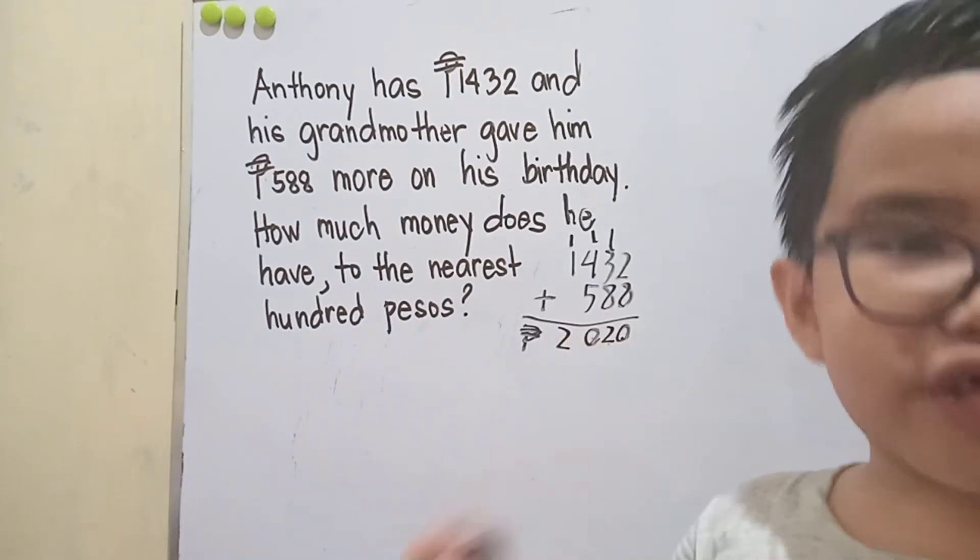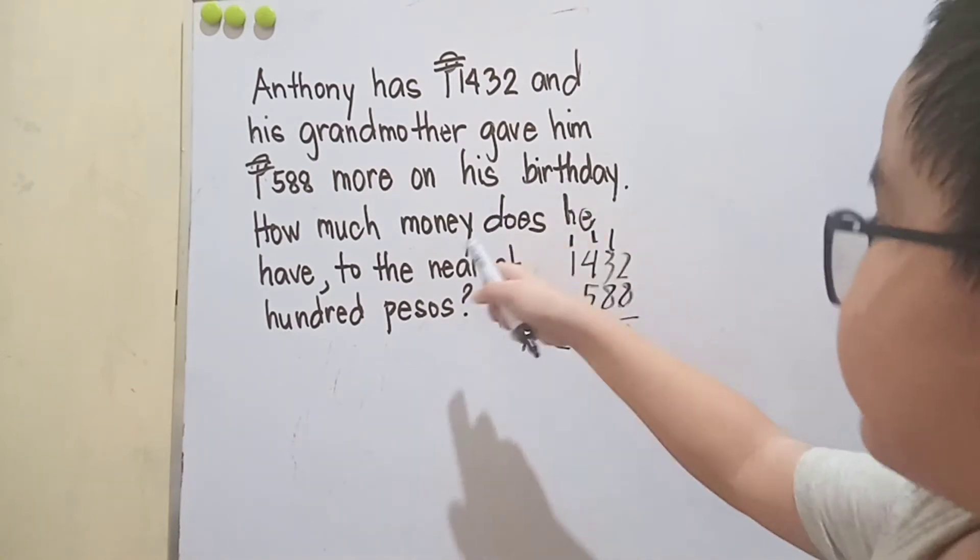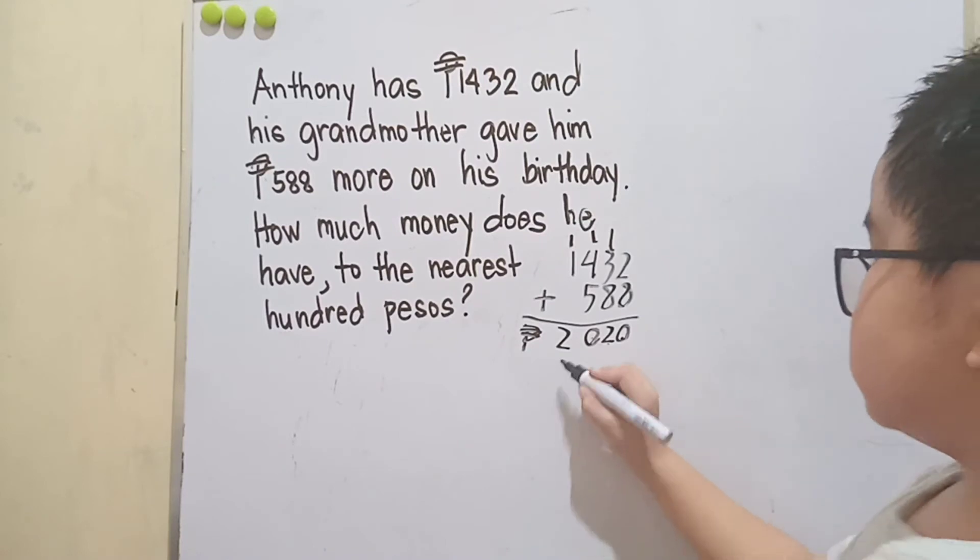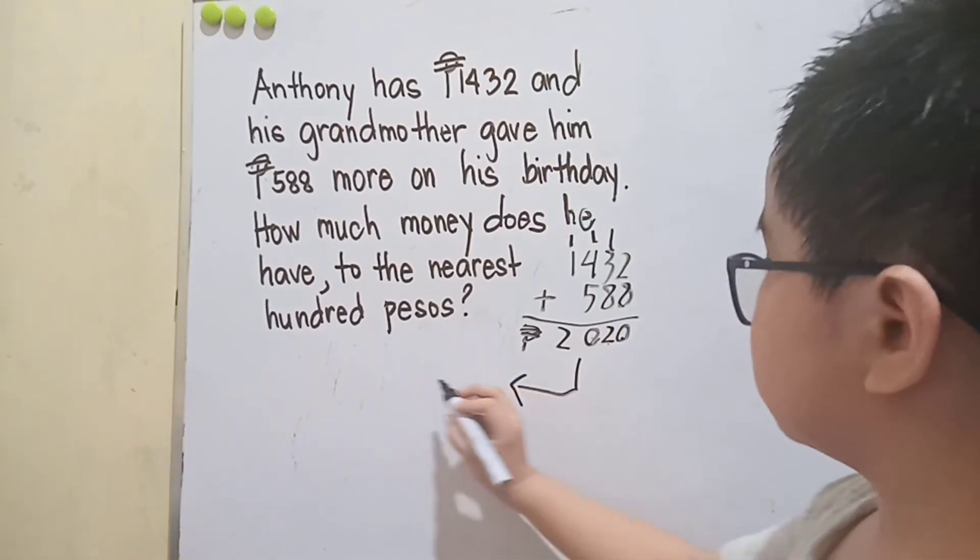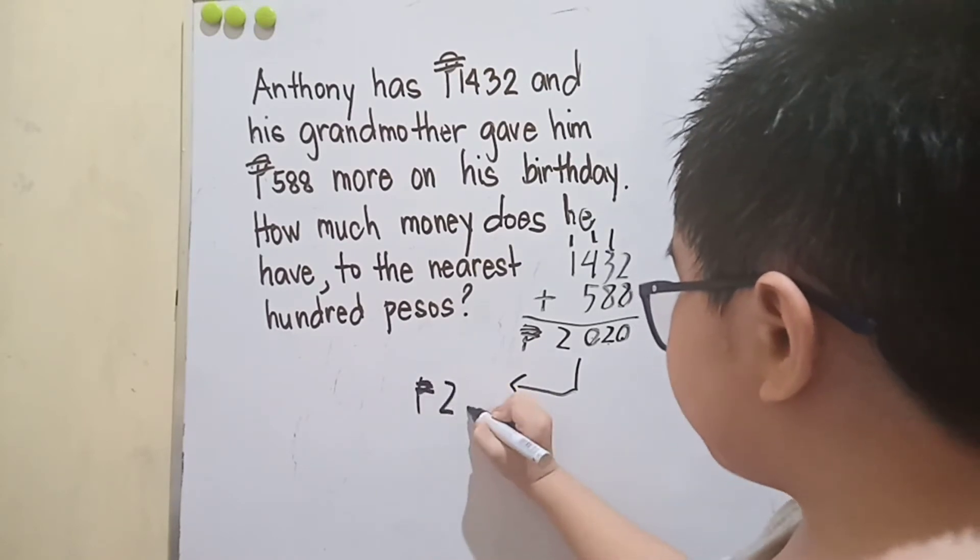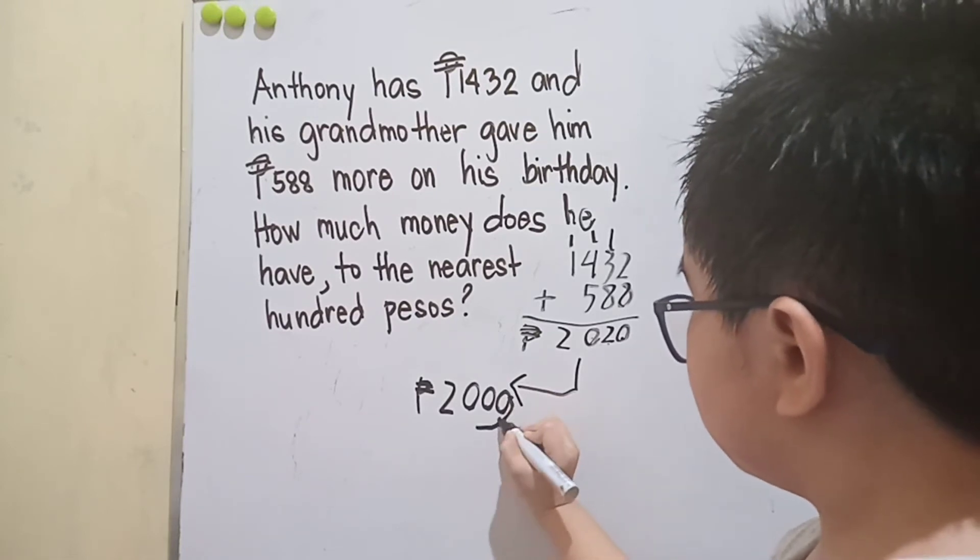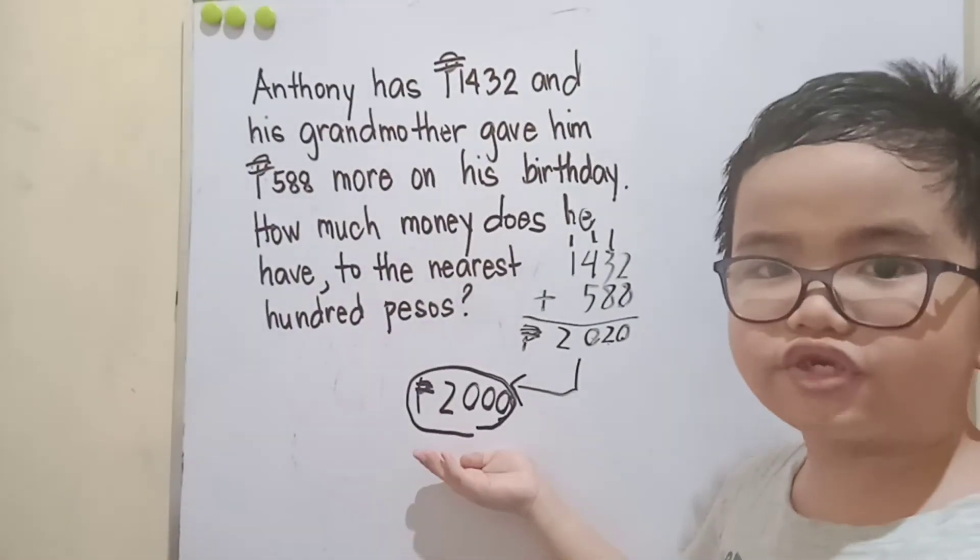But in this problem, we are asked for the money to the nearest hundred pesos. So 2,020 pesos becomes 2,000 pesos. 2,000 pesos is the final answer.